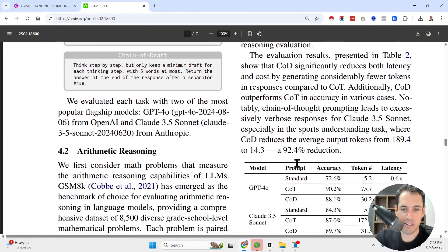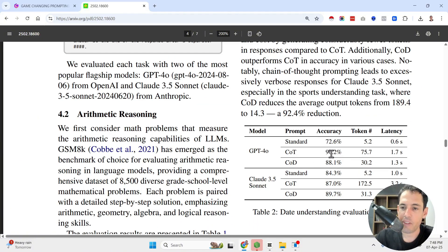Now, let's see in some common sense reasoning tests. You can see over here, again, the chain of draft yields almost a similar result as chain of thought. With Claude Sonnet 3.5, it actually produced better results than in the chain of thought. And as you can see here, the amount of tokens required is significantly less than the amount of tokens required in the chain of thought. And in terms of latency, it almost cuts the time in half. Over here, it's almost similar.